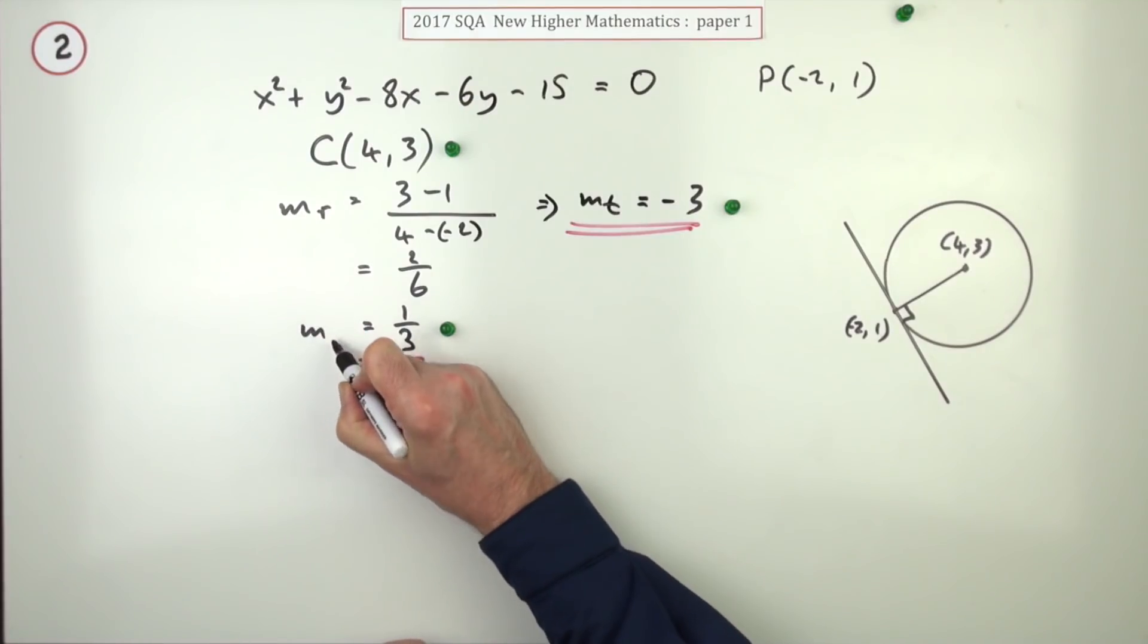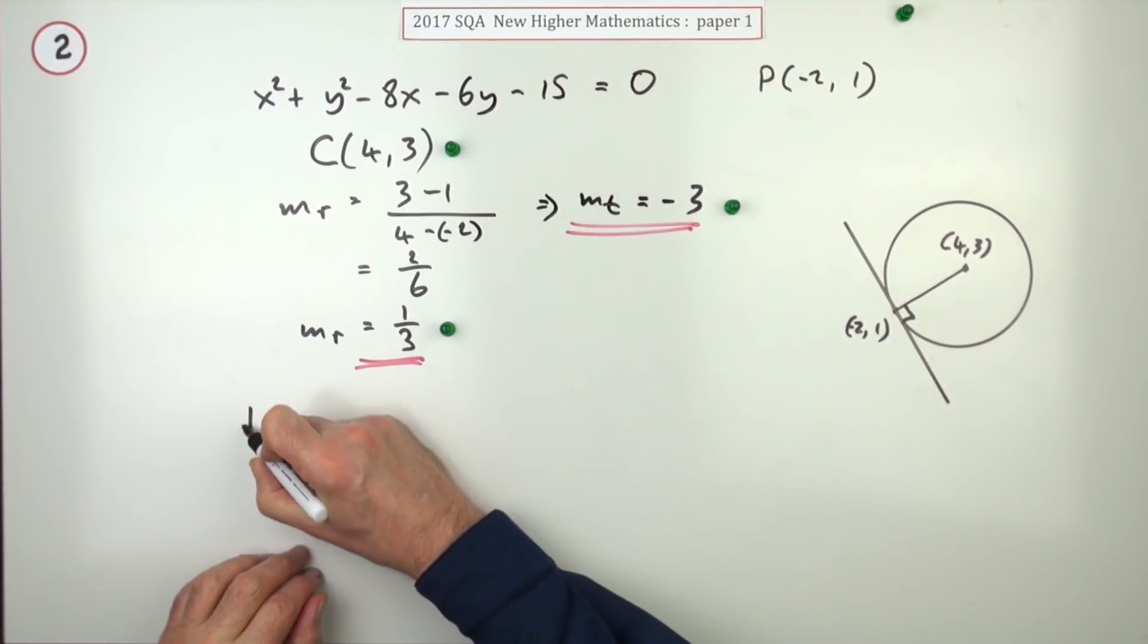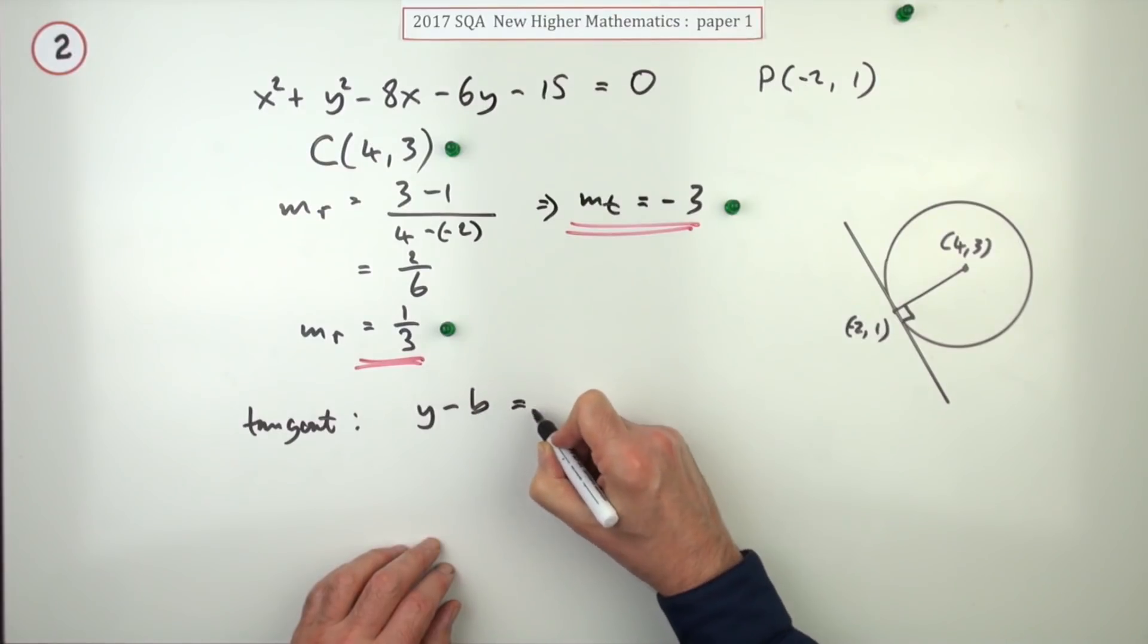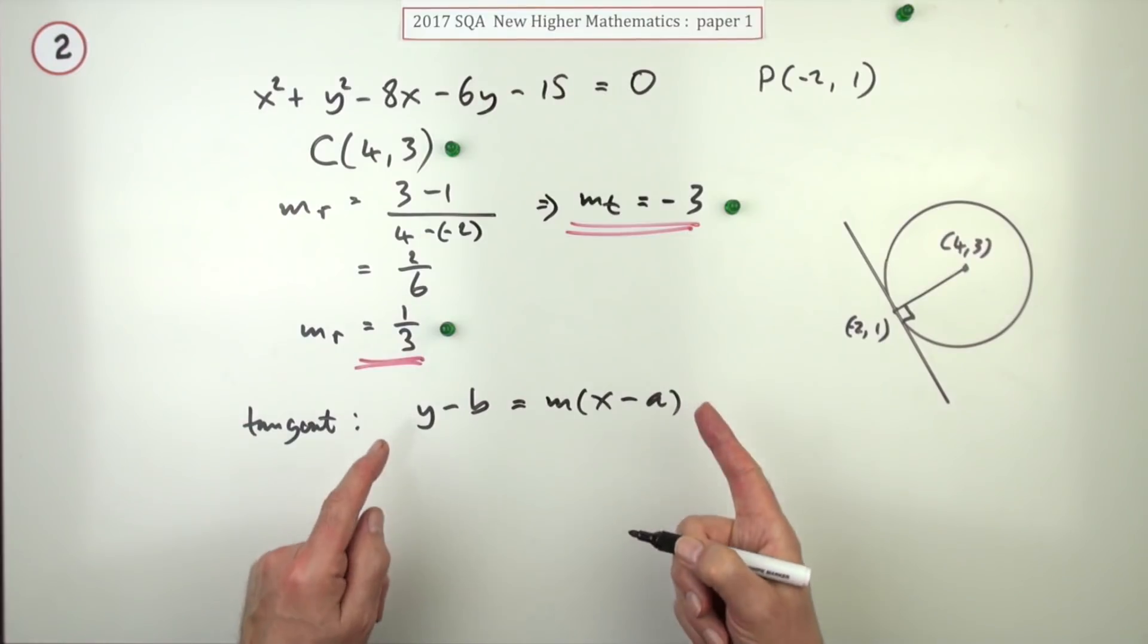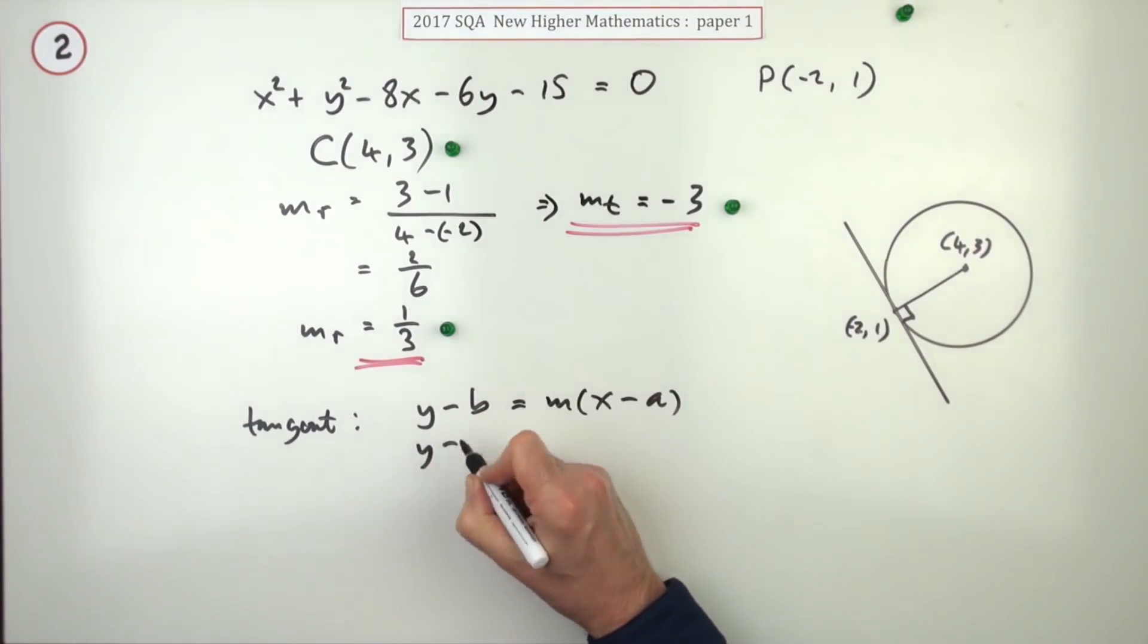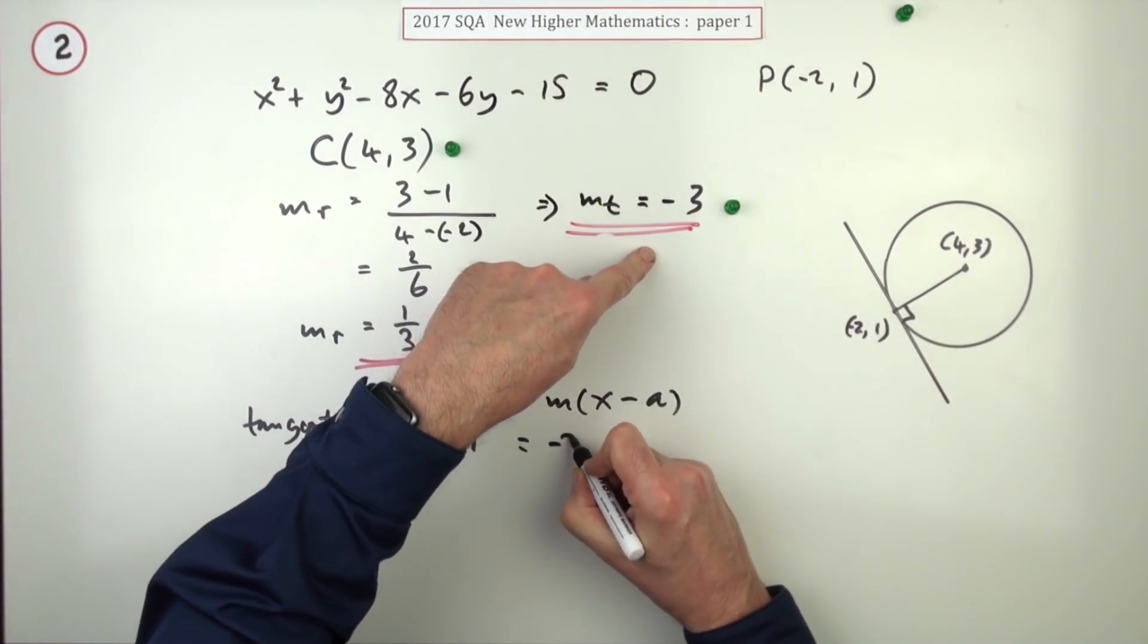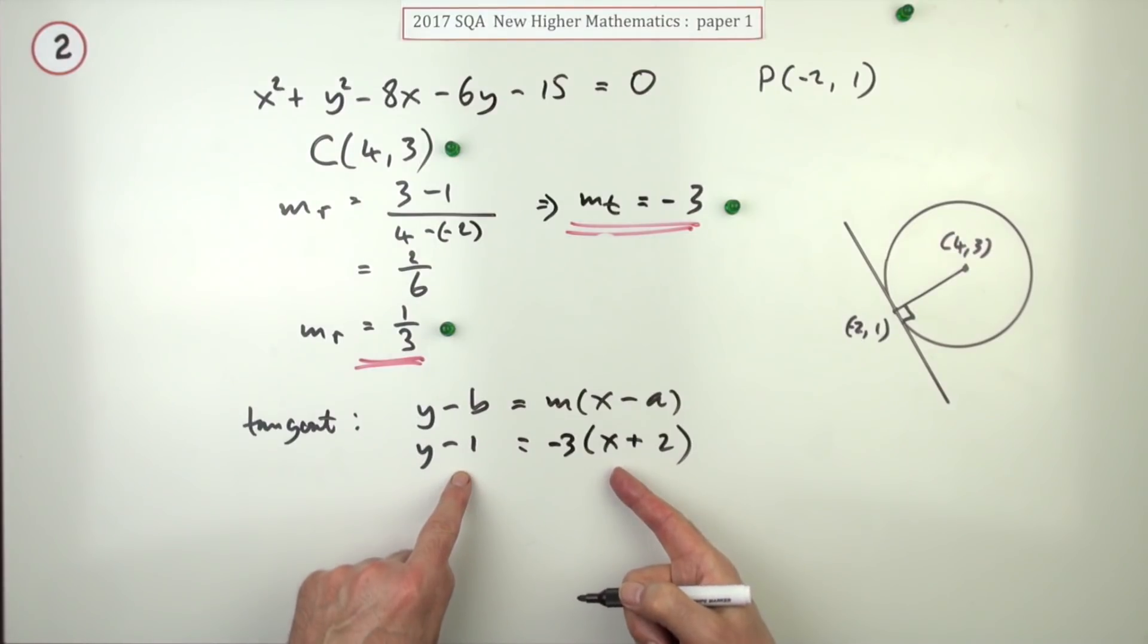We'll just rewrite its name there, gradient of R. Now the final mark's just for the tangent. So what is the equation of this tangent? Well, you'll be using y minus b equals m(x minus a) to find the equation of a line. So y minus the y-coordinate, don't put in the center, that's the point it's going through, is the gradient negative 3 times x minus the x-coordinate. So that's minus a negative 2, but I'll just leap in with a plus 2. Now don't leave it like that.